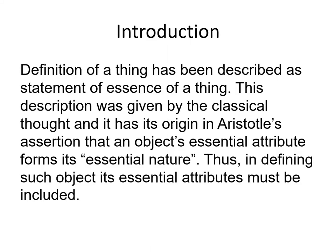The definition of a thing has been described as a statement of the essence of a thing. This description was given by classical thought, and it has its origin in Aristotle's assertion that an object's essential attributes form its essential nature. In defining such an object, its essential attributes must be included.